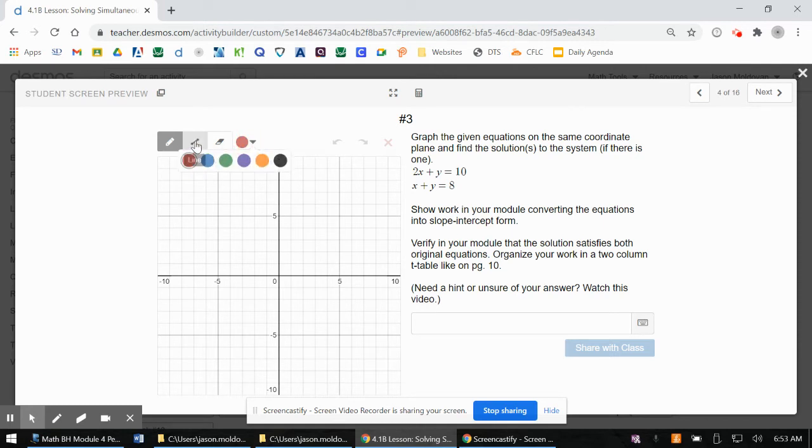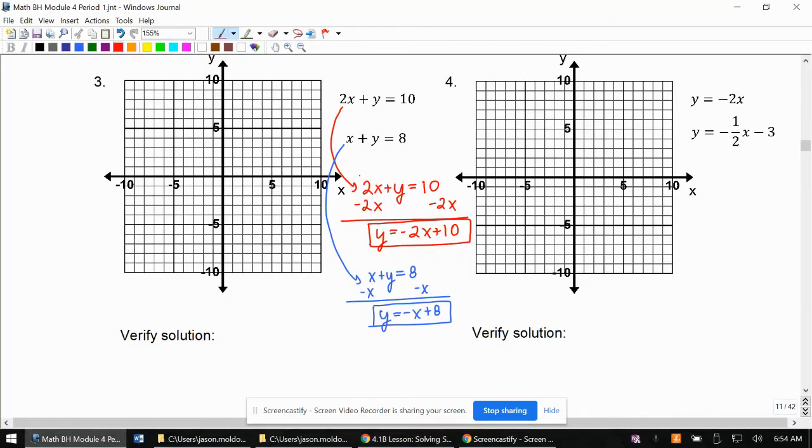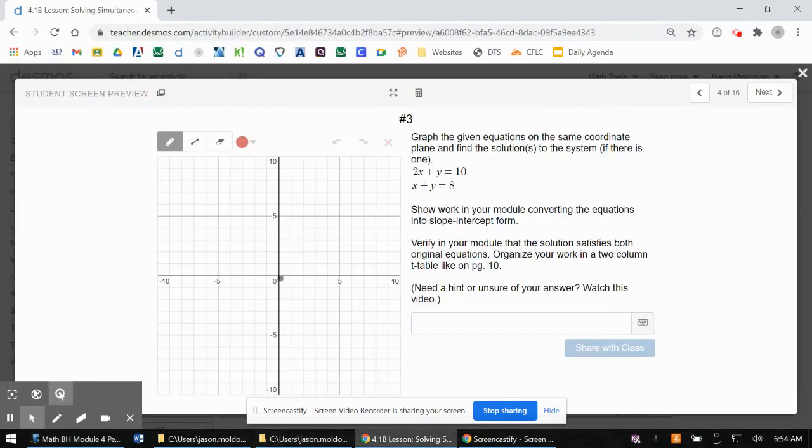We'll even try to use the same color. I like to plot my points first, though. So this was the line which was Y equals—I'm going to double check, actually. Y equals negative 2X plus 10. Cool. So we're up at 10.